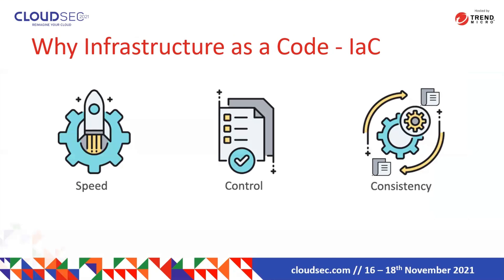So what can IAC achieve? When we ask most customers why they are moving into infrastructure as code, the first thing they always mention is speed. They are building lots of assets and workloads on the cloud and cannot achieve this the traditional way by going into a physical server and building it from scratch. IAC helps you generate even hundreds of servers and workloads on the cloud with just simple coding.